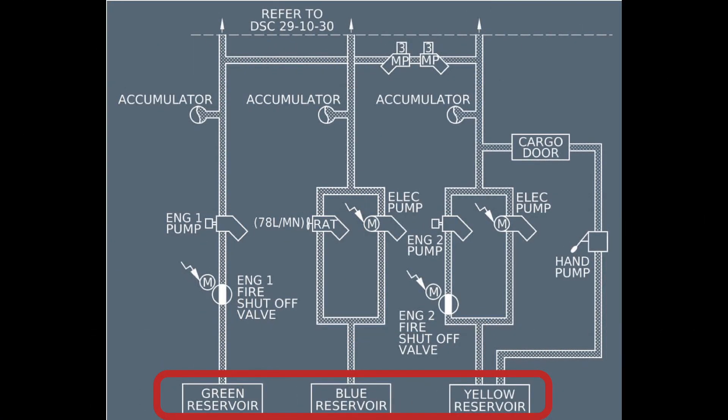Here, you can see the Airbus representation of the hydraulics system. You can see the three reservoirs: green, blue, and yellow. The green system is pressurized by the engine 1 pump. The blue system by the electric pump and the RAT. The yellow system by the engine 2 pump, the electric pump and the manual hand pump.